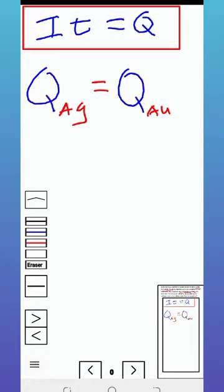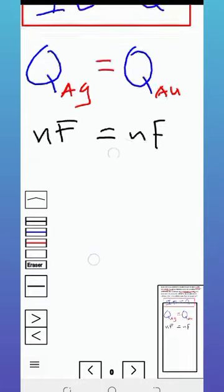So having said this, what is Q? Q is equal to the quantity of N multiplied by F. N meaning the number of moles and F meaning the Faraday's constant. Basically, this N is not necessarily the number of moles of Au or Ag, but this is the number of moles of electrons.